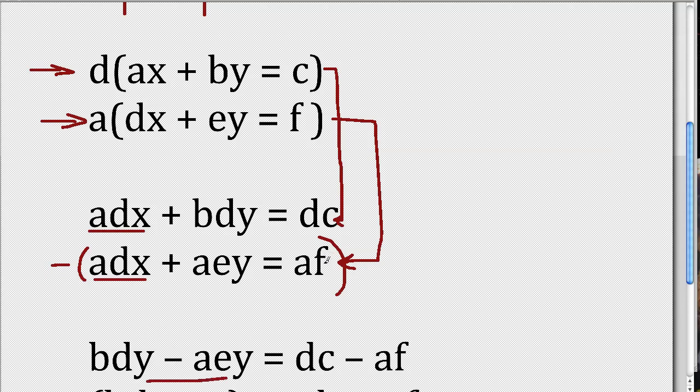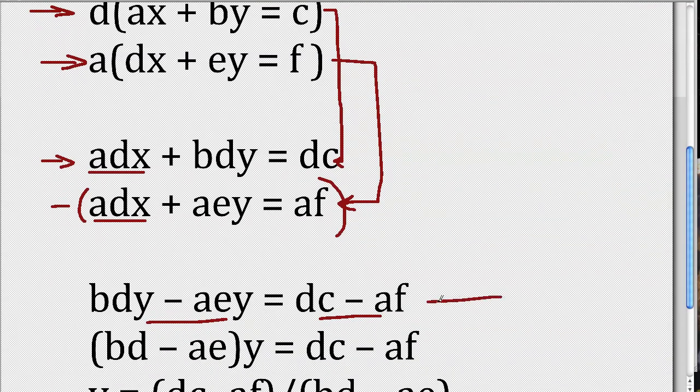And when I subtract AF from DC, I get this thing here. So when I subtract the second equation from the first equation, I get this thing right here.